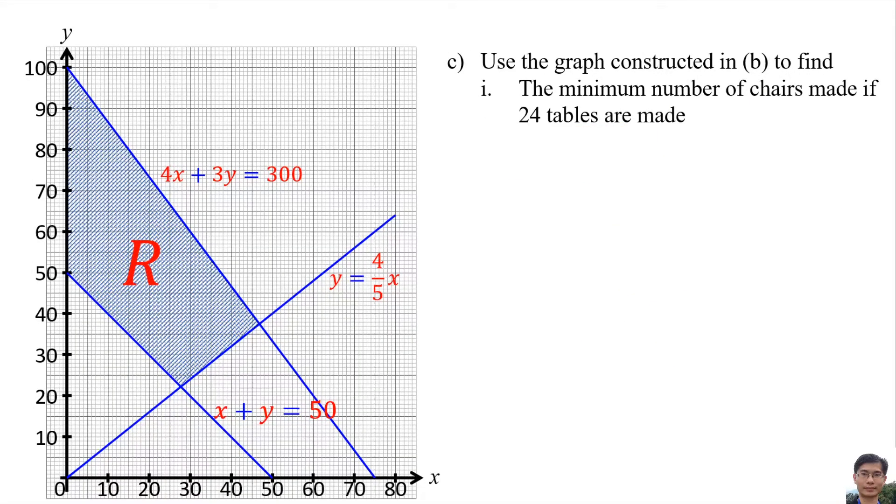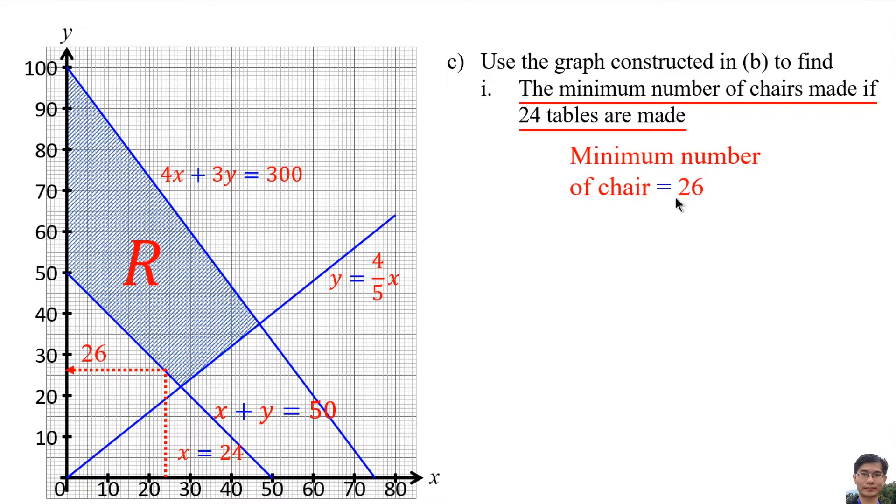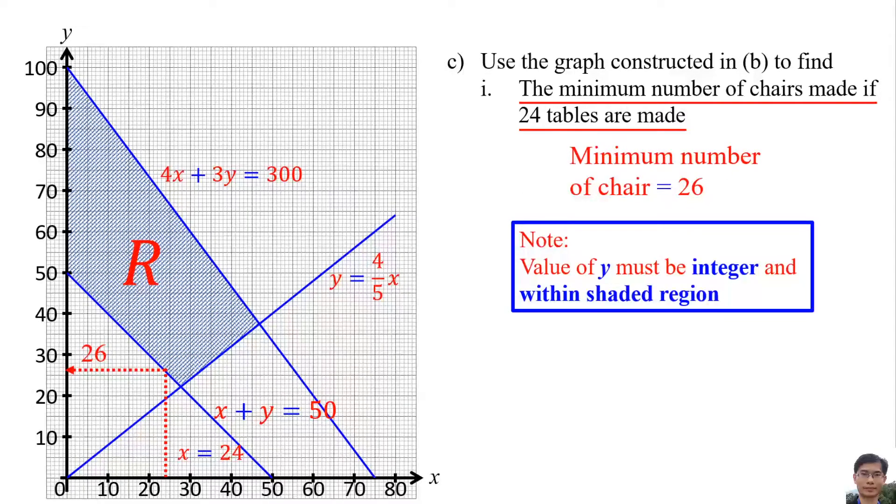Use the graph constructed in B to find the minimal number of chairs made if 24 tables are made. So this means x equals 24. So we draw a straight line, x 24, we draw until hit the shaded region. After that, we find the y, and y is 26. So the minimum number of chairs is 26. And please remember that the value of y must be integer and within shaded region.